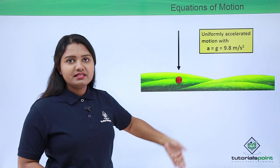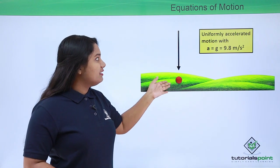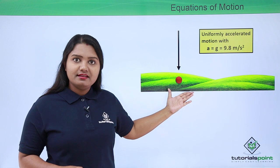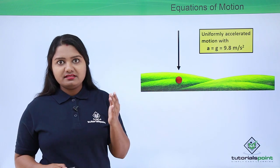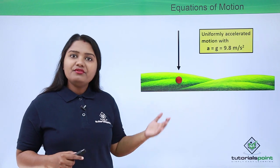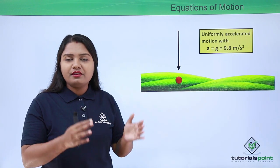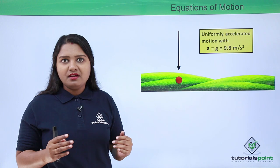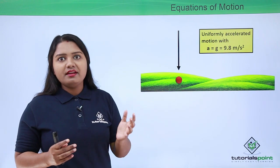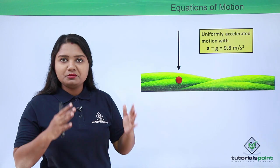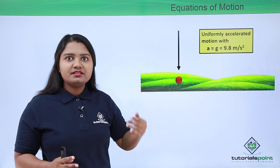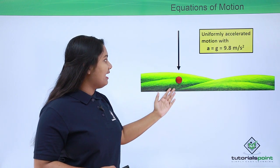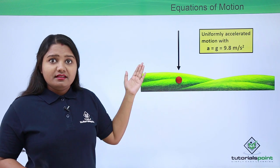Since the body is accelerating with a constant acceleration, the motion it undergoes is uniformly accelerated motion. So we can conclude that a freely falling body, or free fall, is equivalent to uniformly accelerated motion in the vertically downward or upward direction.